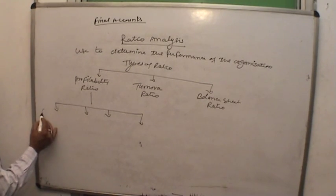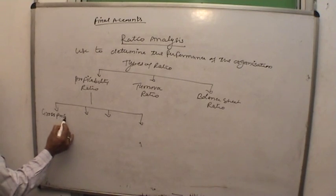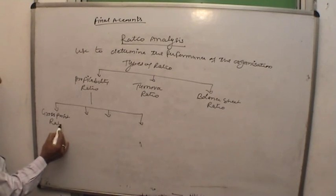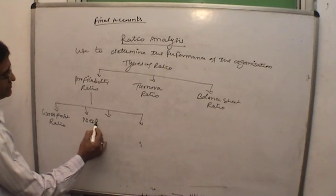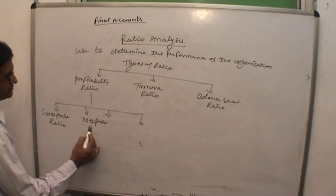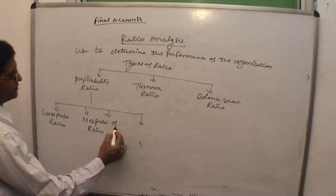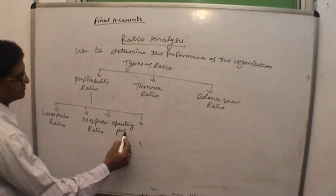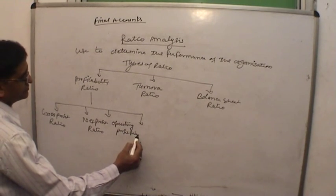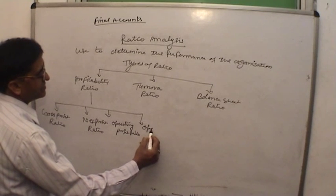The profitability ratios are classified as follows: first is gross profit ratio, second is net profit ratio, third is operating profit ratio, and the last one is operating ratio.